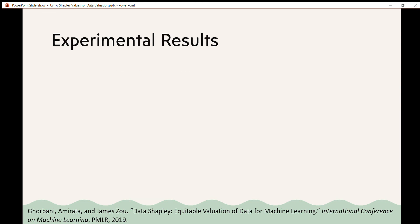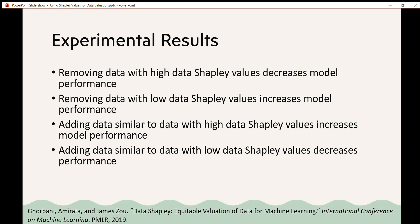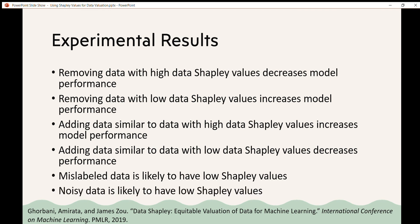The authors run some experiments and they show a few different experimental properties. The first is that removing data with high Shapley values decreases the model performance. Conversely, removing data with low Shapley values increases model performance. Similarly, adding data that's similar to data with high Shapley values increases model performance and adding data similar to data with low Shapley values decreases model performance. Mislabeled data is likely to have low Shapley values and noisy data is also likely to have low Shapley values.